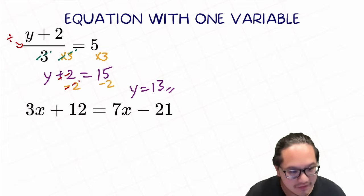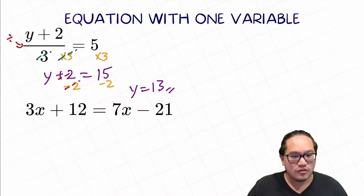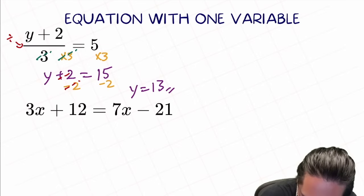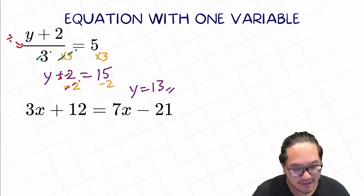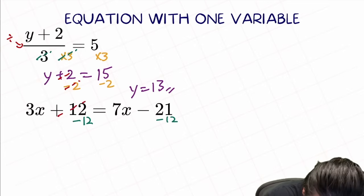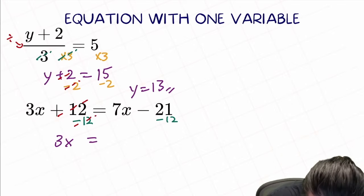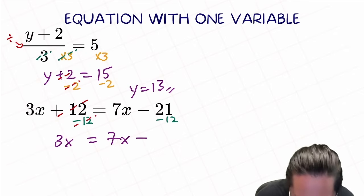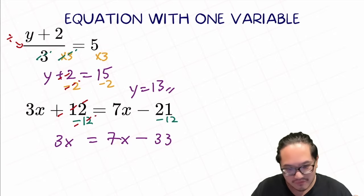So next, let's do a little more complicated one: 3x plus 12 equal to 7x minus 21. Remember, the goal is to isolate x. We can move the pure number terms to the right side. So we minus 12 on both sides to cause the plus 12 to cancel. We have 3x equal to 7x minus 21 minus 12, equal to minus 33.